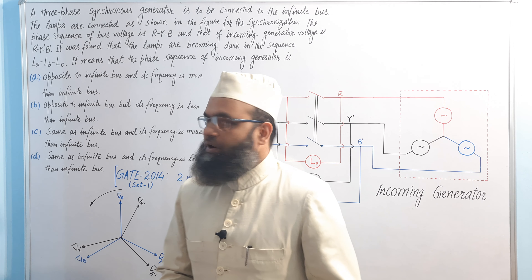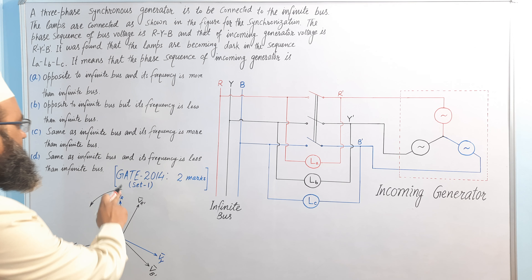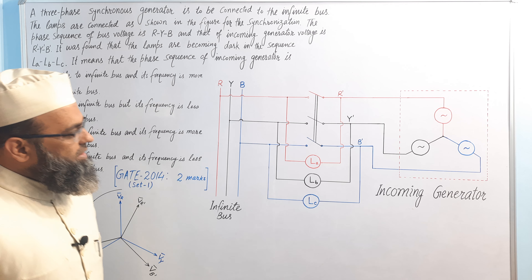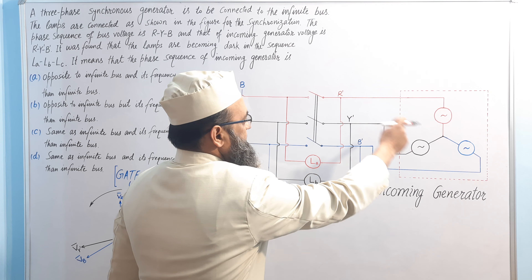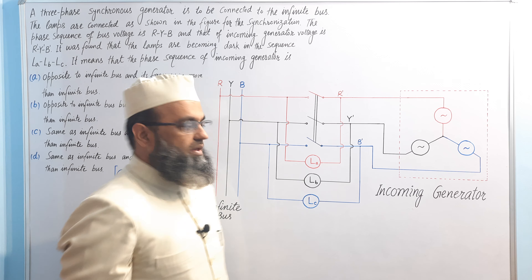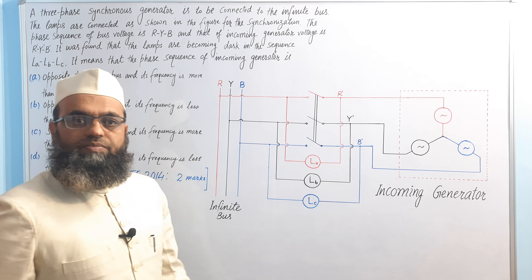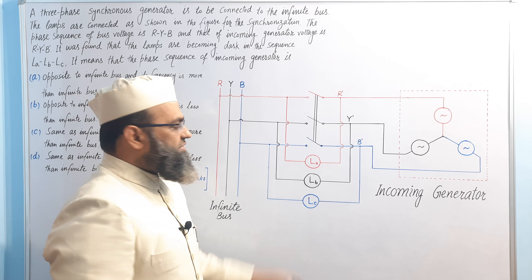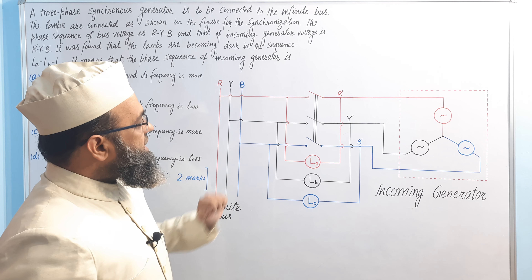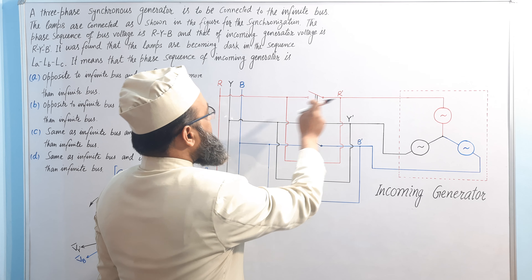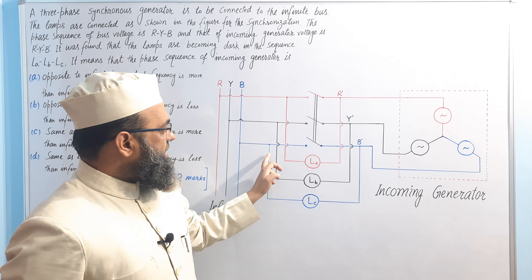Dear students, in this lecture we are going to discuss a question on synchronization which was asked in GATE 2014. The setup shows an incoming generator with three phases R-dash, Y-dash, B-dash, connected to an infinite bus with three phases R, Y, B. The three lamps La, Lb, and Lc are directly connected to the respective phases of the alternator and infinite bus.